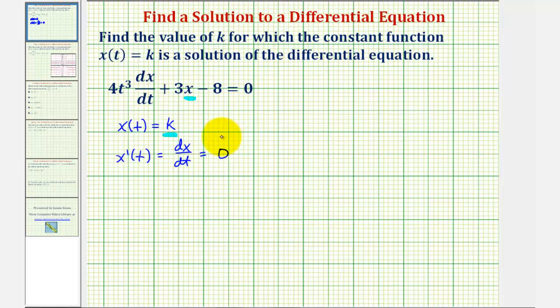So now we can substitute zero for dx/dt and then solve for k. We would have 4t³ times dx/dt, which we know is zero, plus 3 times x where x equals k, minus 8 equals zero.